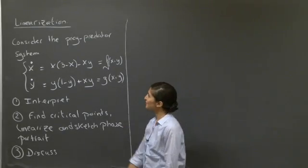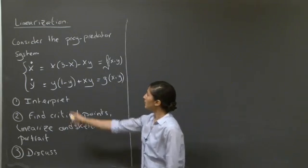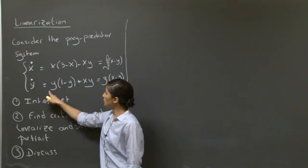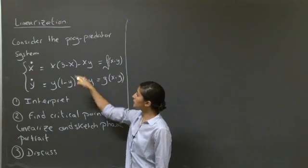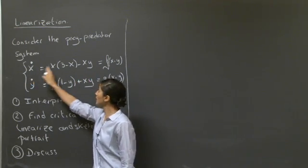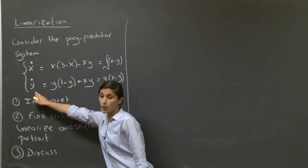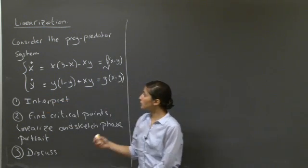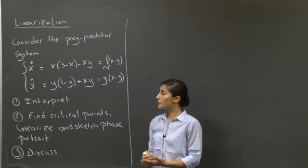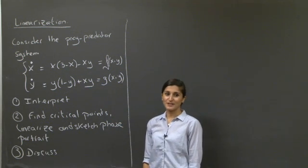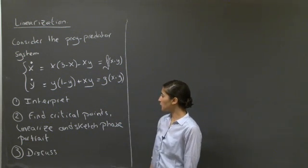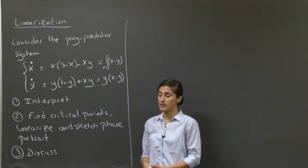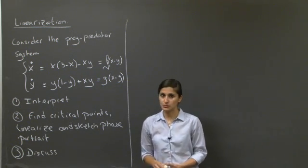Welcome to this recitation on linearization. We consider a prey-predator system where x-dot equals x times (3 minus x minus xy), and y-dot equals y times (1 minus y plus xy). Here x is the prey, because y is feeding on it, and y is the predator, because feeding on x gives growth of the predator species. x and y are assumed to be positive. You are asked to find the critical points, linearize, sketch the phase portrait, and discuss what the linearization tells you about the behavior of this system. Pause the video and take a few minutes to do that.